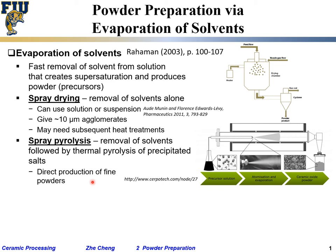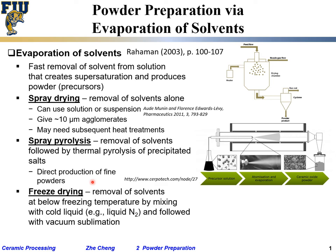Of course this method has advantages and disadvantages. The other method is called freeze drying. Instead of using heat, you use freezing — low temperature removal of solvents below the freezing point — by mixing with cold liquid, followed by vacuum sublimation, which means going from solid directly into gas. That's how the solvents are removed and you are left with fine powder.